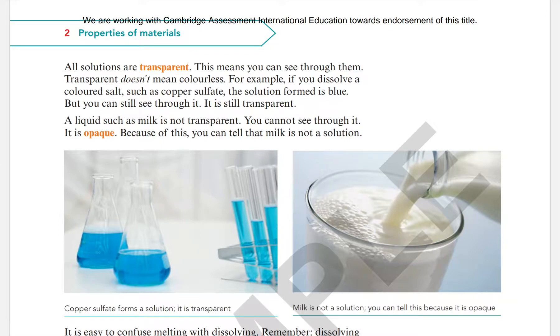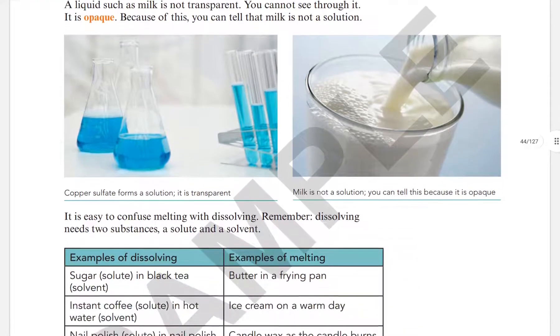It is easy to confuse melting with dissolving. When melting occurs, we are changing the state of a substance by applying energy. Dissolving is different — it involves two substances: a solute and a solvent.